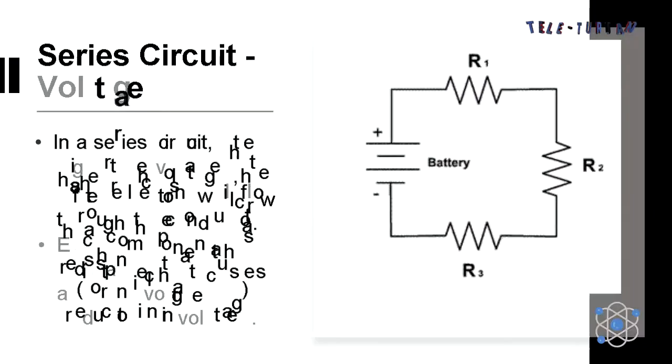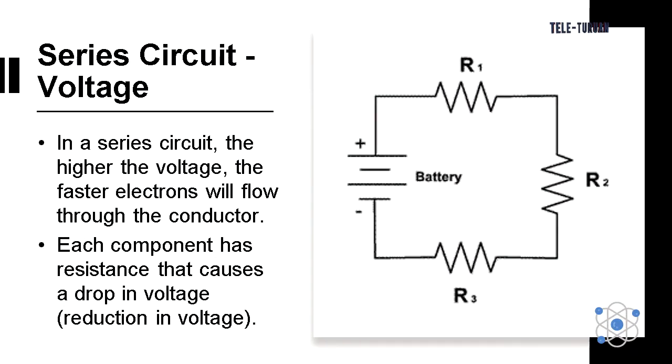In a series circuit, the higher the voltage, the faster electrons will flow through the conductor. Each component has resistance that causes a drop in voltage.